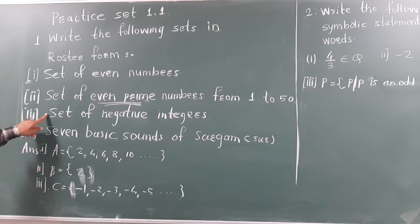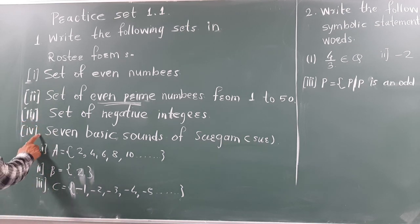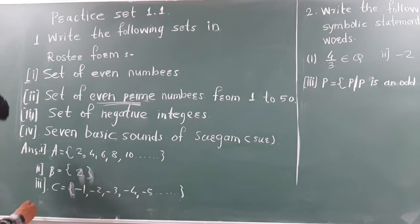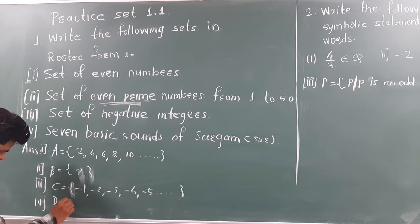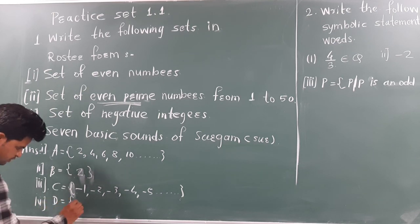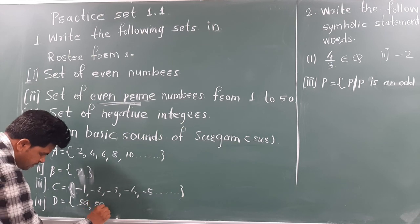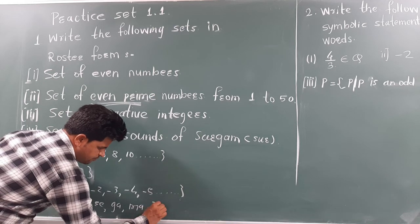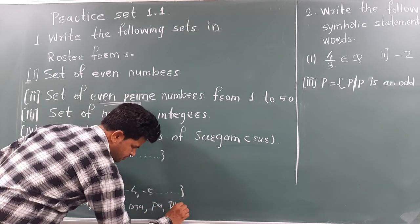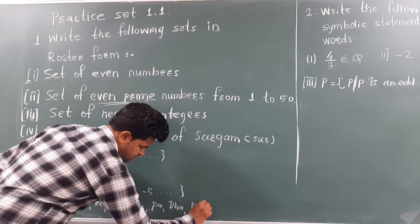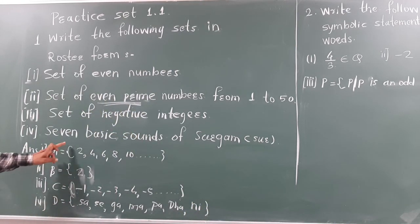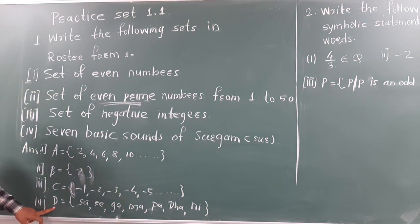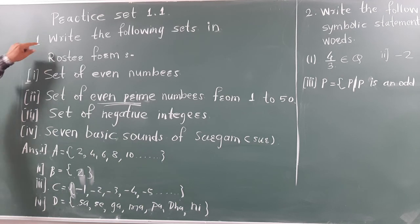We have finished the third. Now, last and seven, last of sets, seven basic sounds of C. These are Sa, Re, Ga, Ma, Pa, Dha, Ni. This is the set of seven basic sounds in set D. We have finished the practice set 1.1 first problem.